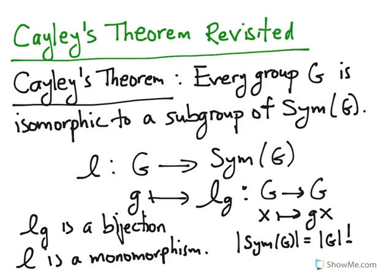So even if G is relatively small, say a group of order 5, automatically the sym of G is going to have an order of 5 factorial, which is 120.